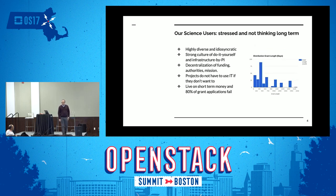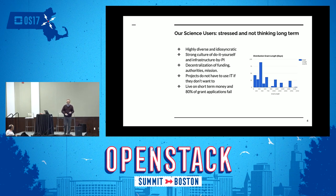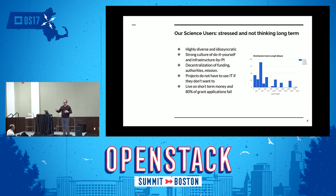In terms of length of grants, people are operating on year cycles — a lot of the grants are about 365 days, very few are longer. That means people are constantly having to build and recreate projects on a short-term basis. They don't have a lot of patience for grand notions of big infrastructure — they're there to run their individual science projects with very little time, very little patience, and very little money.